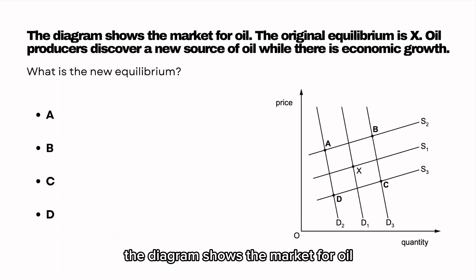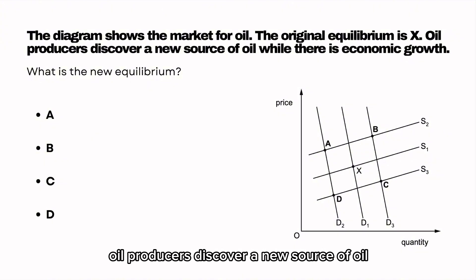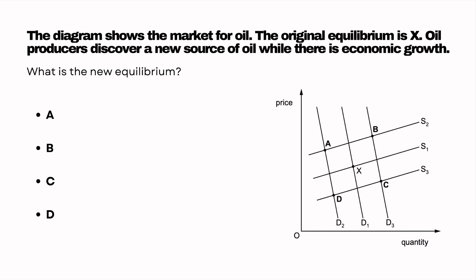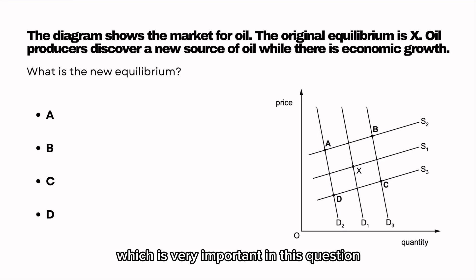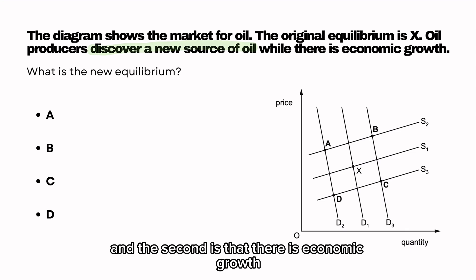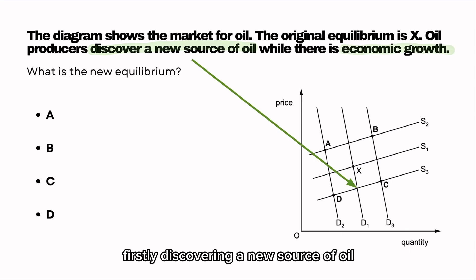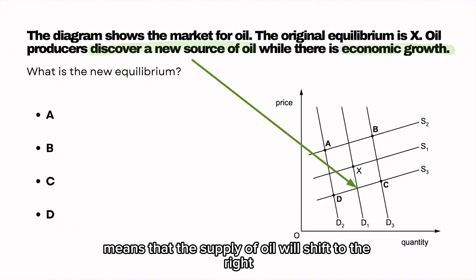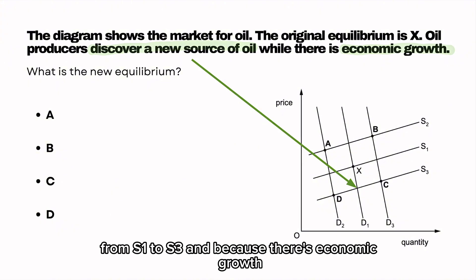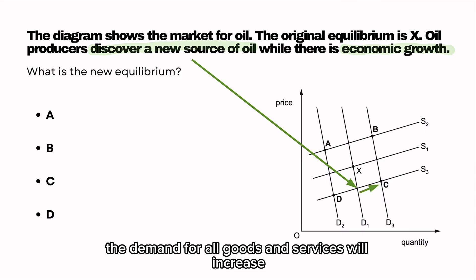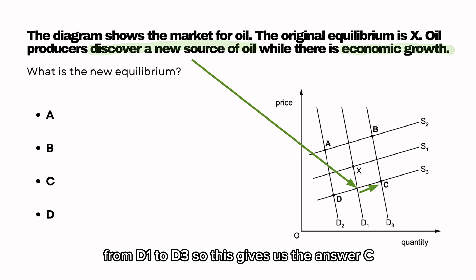The diagram shows the market for oil. The original equilibrium is X. Oil producers discover a new source of oil while there is economic growth. What is the new equilibrium? There are two pieces of information: first, the discovery of a new source of oil means supply will shift to the right from S1 to S3. Second, because there is economic growth, demand for all goods and services will increase from D1 to D3. So this gives us the answer C.